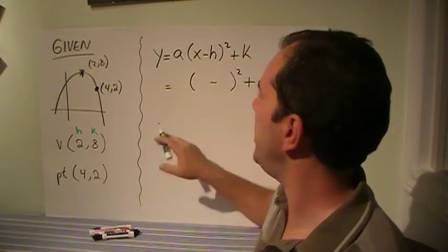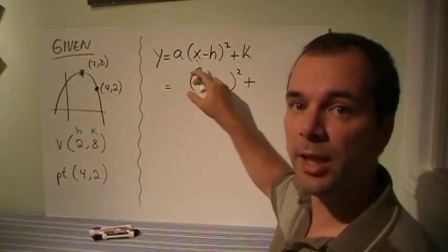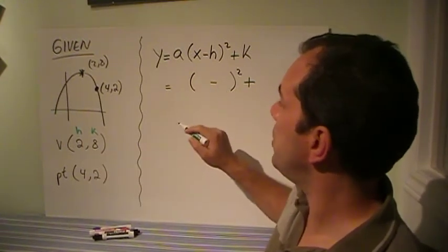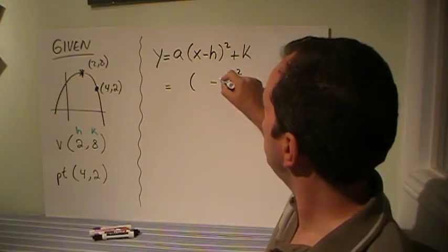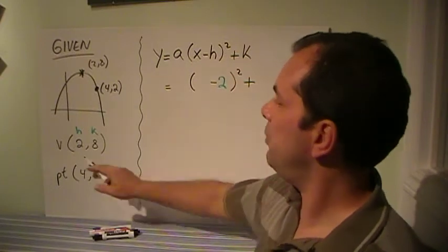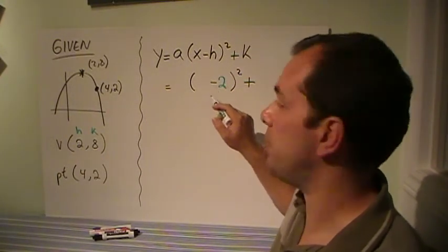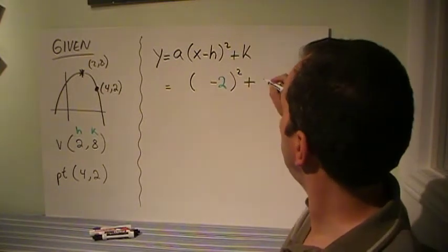If that's the h and that's the k, then I can go to the y equals a(x minus h)² plus k. 2 was the h, so that goes here. If it was minus 2, this would become minus minus 2, which ended up being plus 2. And the k was 8, so it's plus 8.